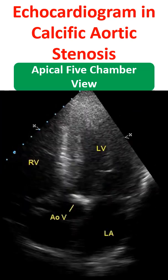Still frame from apical 5-chamber view showing four cardiac chambers and the aorta with calcified aortic valve. The interventricular septum can be seen thickened as part of the left ventricular hypertrophy.